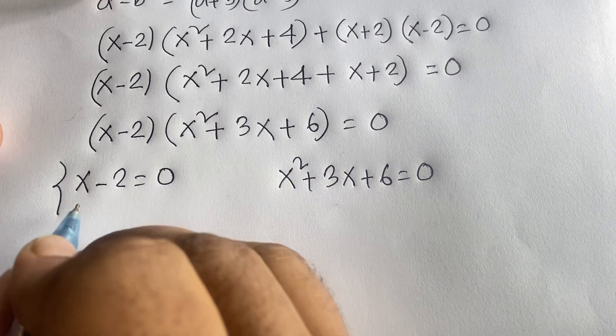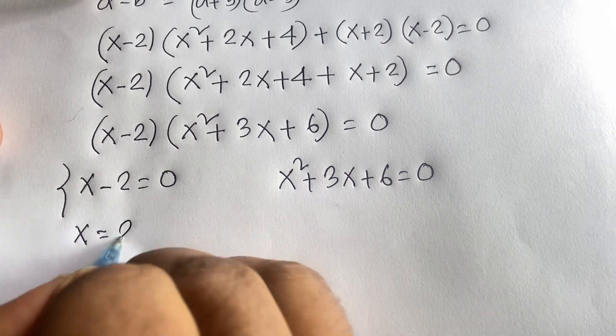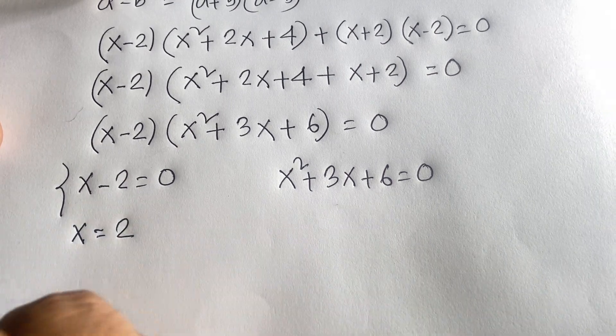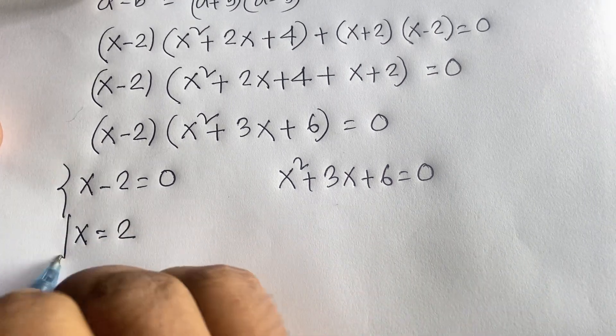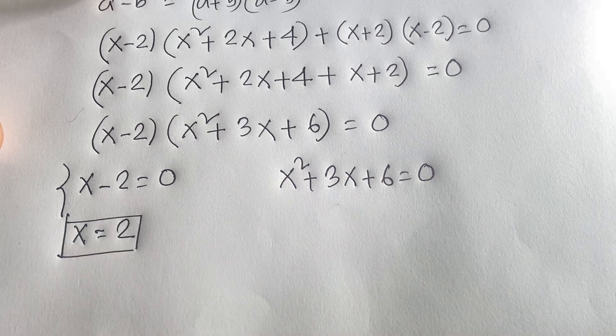From x minus 2 equals 0, we get our real answer: x equals 2.